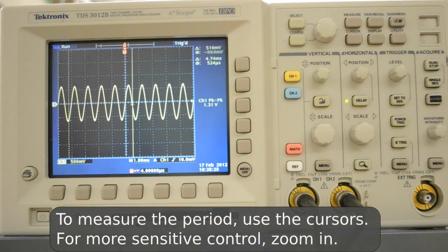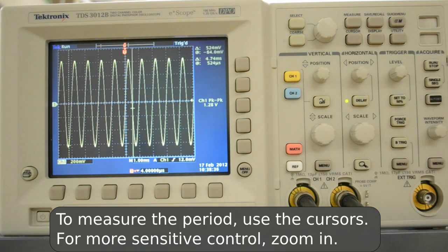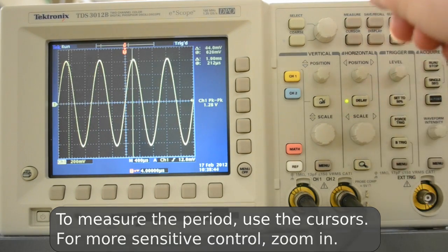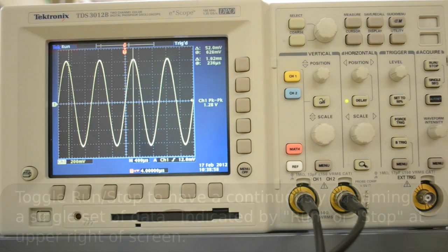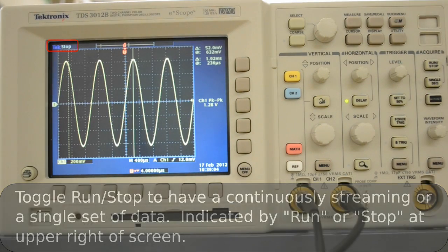To actually measure something like the period, we can use the cursor. I'm going to zoom in first a little bit to get a better idea of where we'll be with the cursor, and we can adjust the horizontal position to get some more resolution. I'll hit run stop to ensure that I'm just looking at the same set of data instead of a continuously streaming set of data.